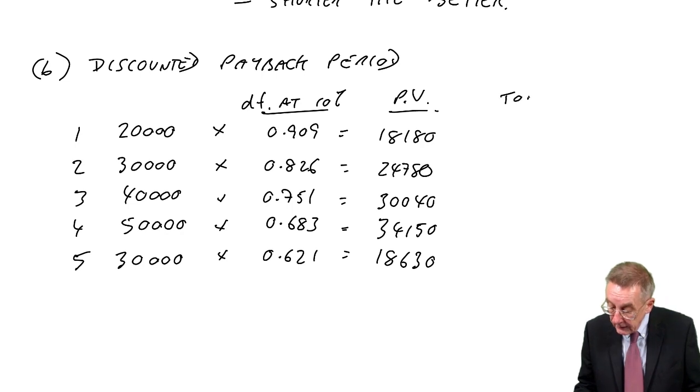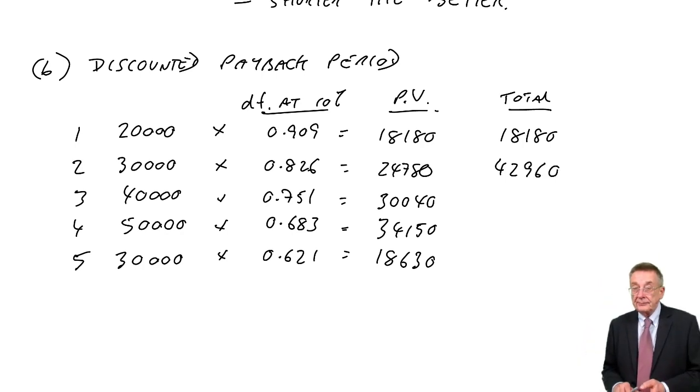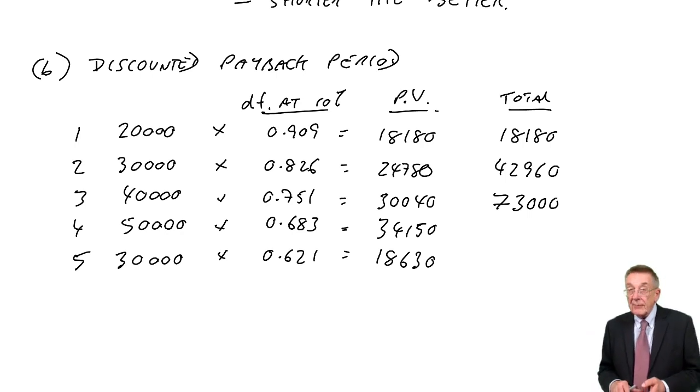How much have we got? After one year, we've had £18,180. We need £100,000, so we're obviously way off. The second year, we get an extra £24,780, so we've now got a total of £42,960. Still not enough. In the third year, £30,040 extra. So the total is £42,960 plus £30,040, which is £73,000. We're getting closer.